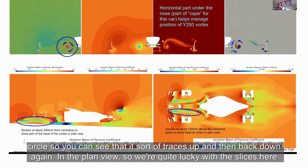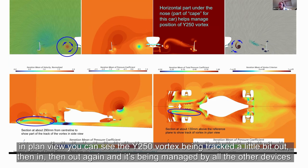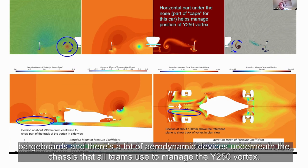In plan view, you can see the Y250 Vortex being tracked a little bit out, then in, then out again. And it's being managed by all the other devices like the barge boards and the aerodynamic devices underneath the chassis that all teams use to manage the Y250 Vortex.